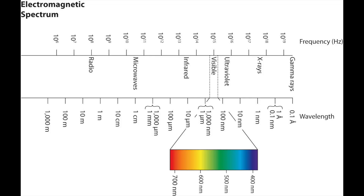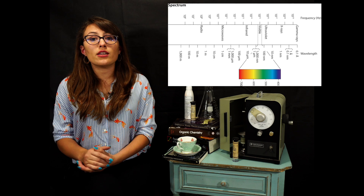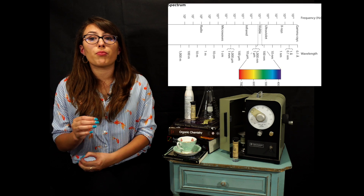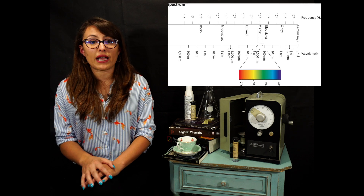The electromagnetic spectrum includes all wavelengths of electromagnetic radiation. High frequency, high energy waves are on the right of the spectrum, and on the left is low frequency and low energy. So a little bit about each portion of this spectrum.